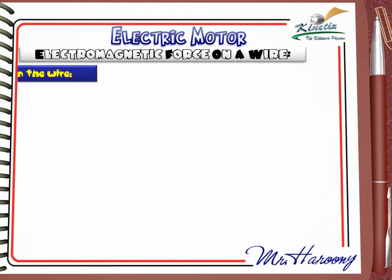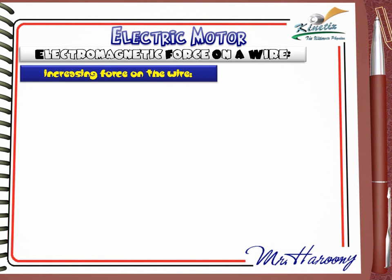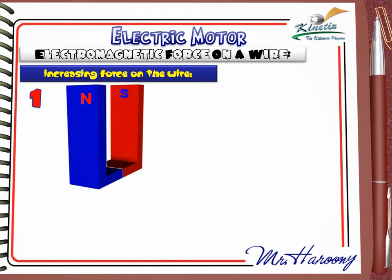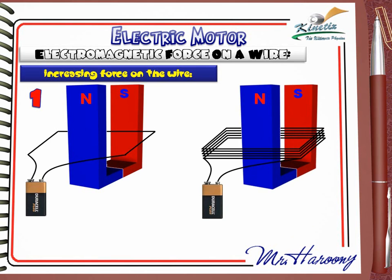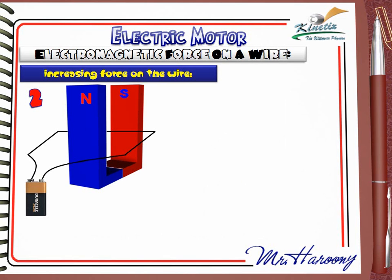Can we cause a stronger pushing force on the wire? To increase the pushing force, we must make changes. Change 1 does not require replacing any apparatus: changing the wire from a single loop into a coil exposes more of the wire to the magnetic field, producing more force. A coil with a greater number of turnings will further increase the force. So: increase the number of turnings of the wire.